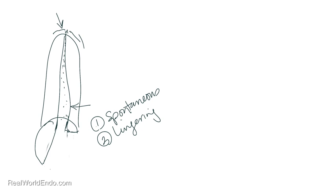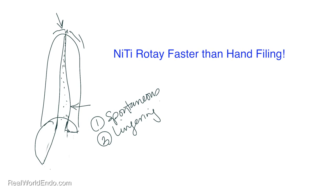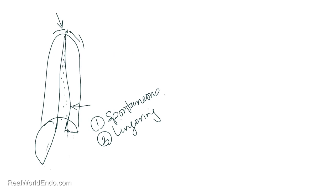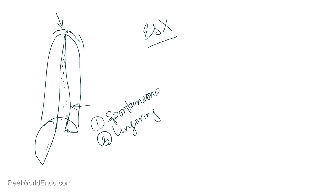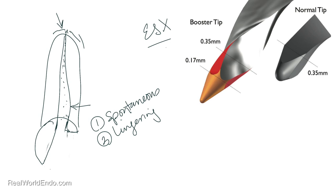What's a good instrumentation system to use? You have a number of options. Clearly, rotary instrumentation will be far more efficient than hand instrumentation. I've been an EndoSequence user and have now moved on to a more efficient system, the ESX system. The ESX is basically a more abridged version of the EndoSequence system with fewer files — it's essentially a two-file system. What allows it to be a two-file system is a number of features, including the BT tip, which is the booster tip that guides the file, as well as some of the nickel-titanium treatment.